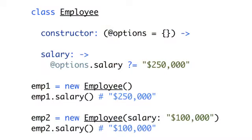So let's create a little class. Let's create an employee class. And that class is going to have a constructor which is going to take an optional list of options. And it's going to have a salary function. And in that function, we're going to say if they've passed in a salary, then return that and otherwise return a salary of $250,000. This is one well-paid employee.